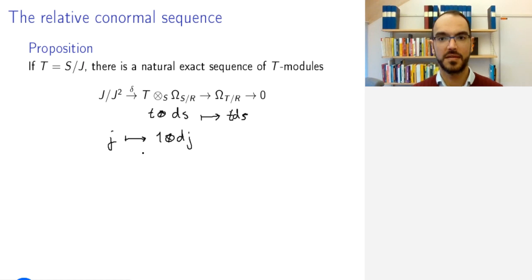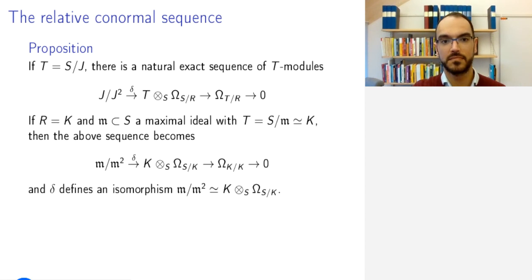The reason I brought this up is that there is a special case that we are especially interested in. Namely, if R is a field K, and M in S is a maximal ideal, with T being S mod M, so this is isomorphic to K. This is, for example, the case if S is the coordinate ring of an affine variety, M is the maximal ideal of a point, and we're working over an algebraically closed field.